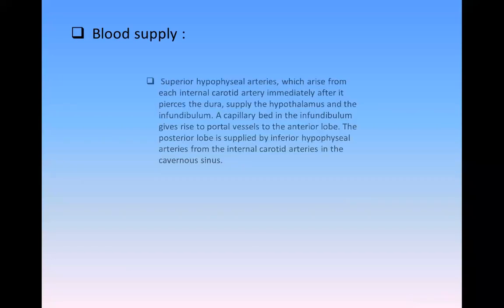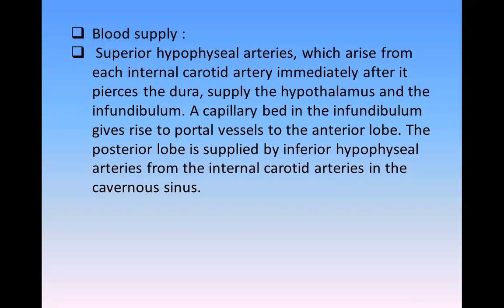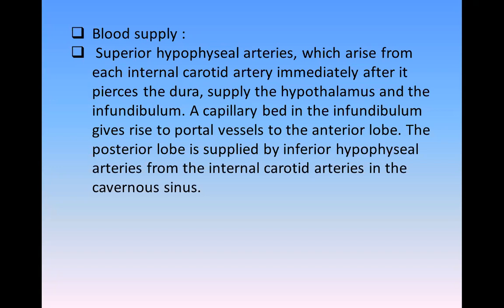The blood supply: there are two types of arteries supplying the pituitary gland — the superior hypophysial arteries and the inferior hypophysial arteries. Both arise from the carotid arteries. The superior hypophysial arteries arise from the internal carotid artery immediately after it pierces the dura, supplying the hypothalamus and infundibulum. The capillary bed of the infundibulum gives rise to portal vessels supplying the anterior lobe. The posterior lobe is supplied by the inferior hypophysial arteries.